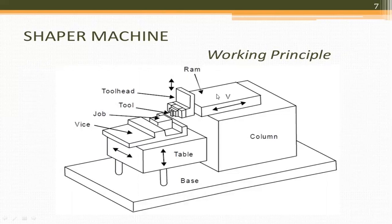The Shaper machine consists of a RAM, tool head, tool, job, vice, table, base, and column. The vice is used to hold the job, and the RAM consists of the tool head and tool.